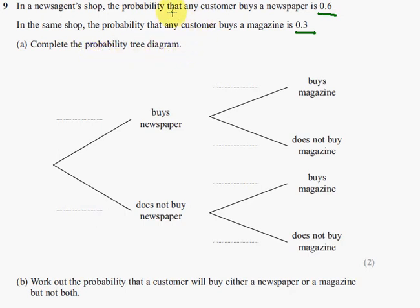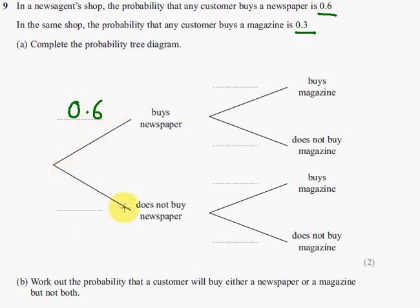The probability that any customer buys a newspaper is 0.6. So, buys a newspaper, the probability is 0.6. The probability that he doesn't buy a newspaper is going to be 1 minus 0.6, because those two have to add up to 1. So, 1 takeaway 0.6 is 0.4.